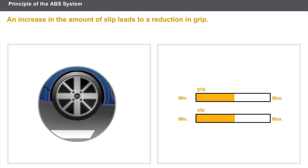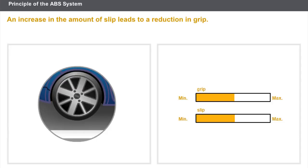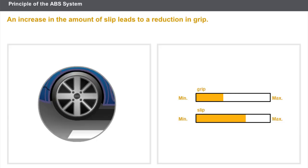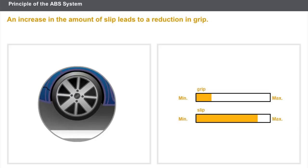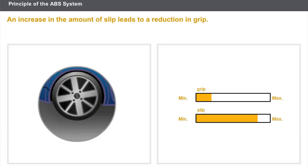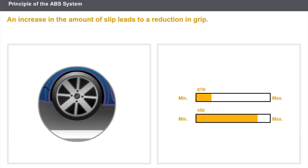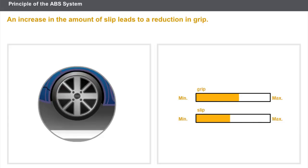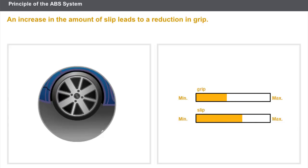Grip allows the transmission of the forces between the tyre and the road surface. Slip, in contrast to grip, does not allow the transmission of the forces. An increase in the amount of slip leads to a reduction in grip. Slip and grip are totally linked.